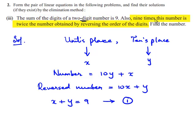And the second condition is 9 times the number is twice the number obtained by reversing the order of the digits. So, 9 times the number which is 10y plus x is equal to twice the reversed number which is 10x plus y.